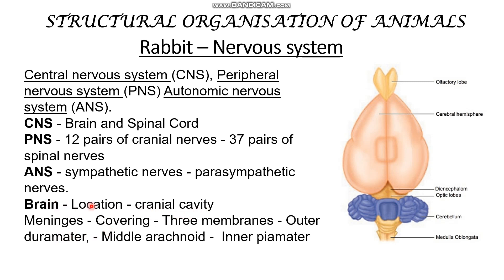The brain is covered by membranes. There are three membranes surrounding the brain, and they are called meninges. The outer membrane is the duramater, the middle is the arachnoid, and the inner is the piamater. To remember this: 'dura' is like 'durable' — it is the stronger, outermost layer that protects the brain. So the order is D-A-P: duramater, arachnoid, and piamater.